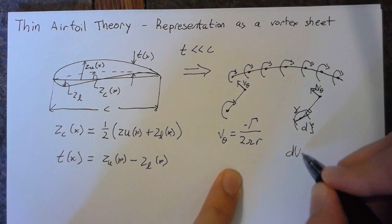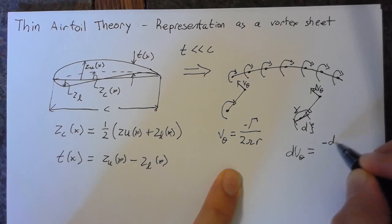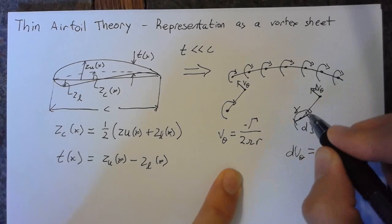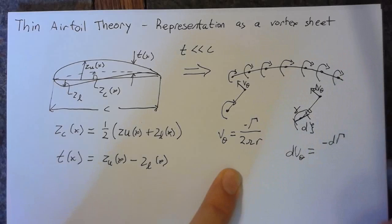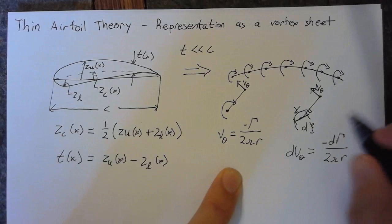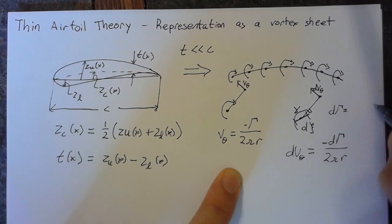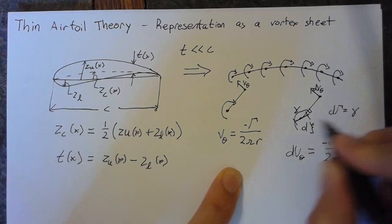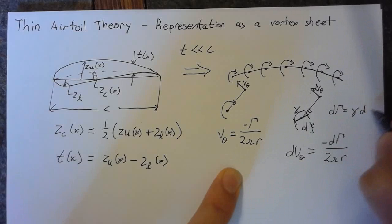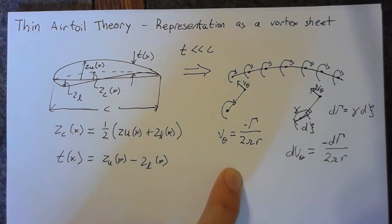So our d v theta in this case is going to be negative d capital gamma, which will be the entire circulation caused by this portion of the panel, again divided by 2 pi r. So what exactly is this differential circulation? It's just simply going to be our gamma per unit length times some length, which is our d xi.